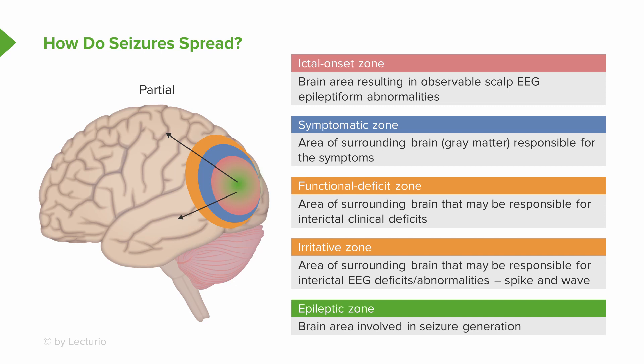Lastly, we see the epileptic zone — the brain areas involved in seizure generation and spread. Typically, that's the smallest individual area where the seizure begins, shown as the green area on the chart here. This is not something we can see on EEG or even on MRI, but biochemically, that's where the seizure will start.